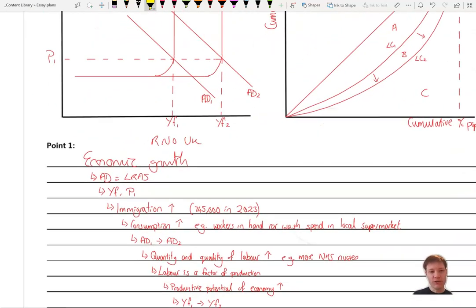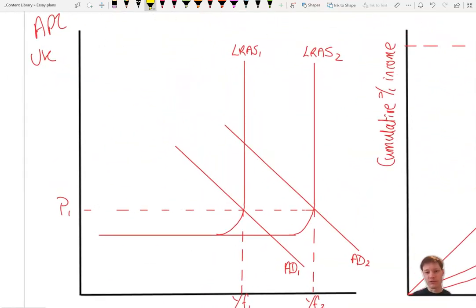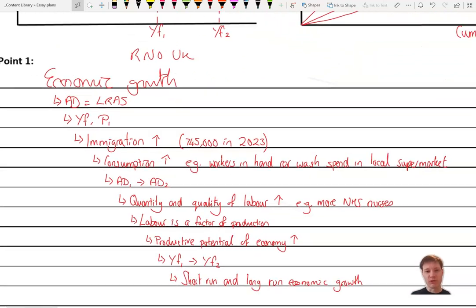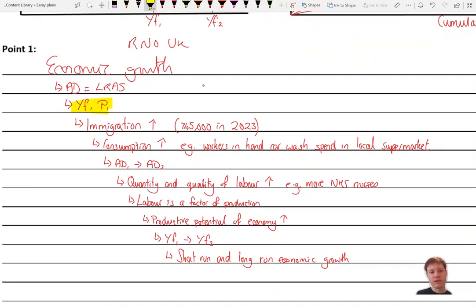Right, coming back then. So our first point, we want to use this diagram here to talk about how immigration affects economic growth. We want a positive argument. Starting off, we start at AD equals LRAS. 745,000 migrants to the UK in 2023. We can say that those migrants will earn money, they will have jobs and therefore consumption will rise. And you may want to give an example of that, really good application. For example, you might talk about workers in hand car washes spending money in the local supermarket going down to Sainsbury's. That's consumption, it's domestic expenditure on domestic goods and services. That will shift AD to the right.